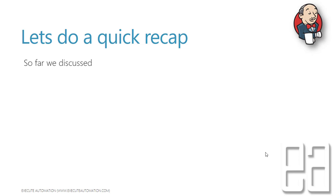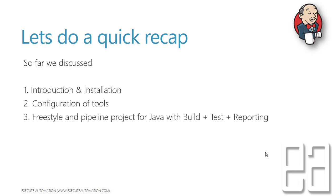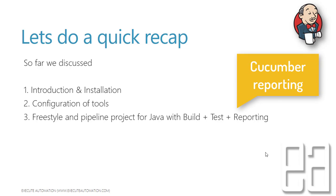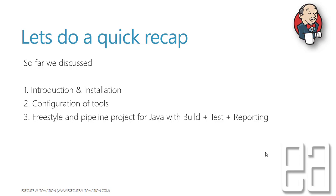Let's do a quick recap of what we have discussed so far. We did the introduction and installation of Jenkins, the configuration of the tools required for Jenkins, and also the freestyle and pipeline project for Java with build, test, and reporting — that is the Cucumber reporting. Those are the key things we discussed so far, and this is a stepping stone for the .NET project as well.